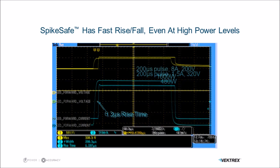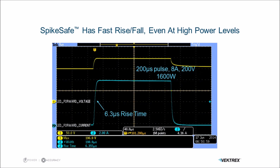The final example is a 1600 watt pulse. This one has a slower rise time of 6 microseconds, but at a 200 microsecond pulse width it still provides only a 1% error with this type of LED.